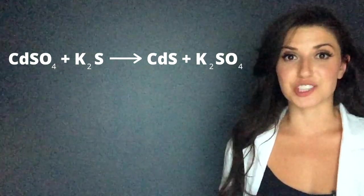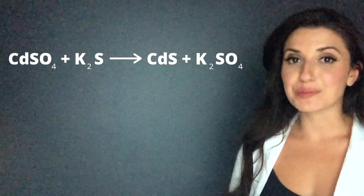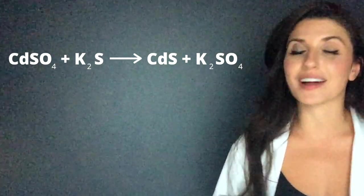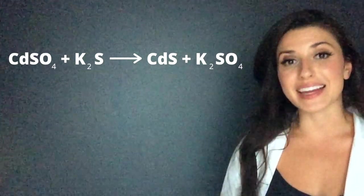Here's my next equation. Let's look at the products. The first is cadmium sulfide. We already learned that sulfides are insoluble unless with a group one element, a group two element, or the NH4 cation.